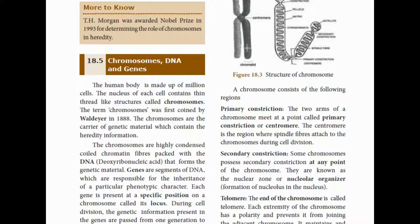Secondary constriction: if there is another notch-like structure at any other location on the chromosome besides the primary constriction, that is called the secondary constriction. This region is also called the nuclear organizer zone or nucleolar organizer region (NOR), because the nucleolus forms at this location.